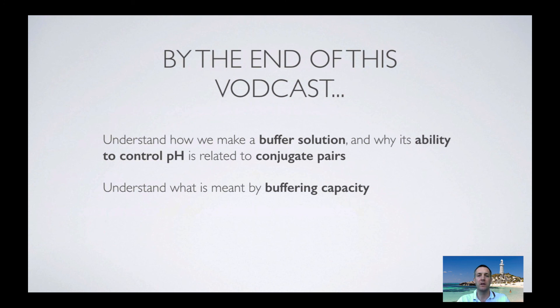So hopefully now you've seen a way of explaining how a buffer works in terms of collision theory and equilibrium principles. You know what a buffer is, a few different ways of making a buffer, and you also know what buffering capacity is. If you've got any questions or comments, or if any of it didn't make sense, then please feel free to come and see me or to post a comment on YouTube.